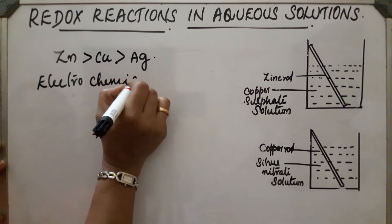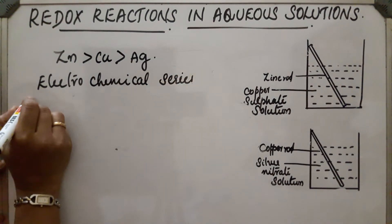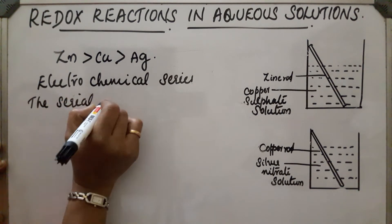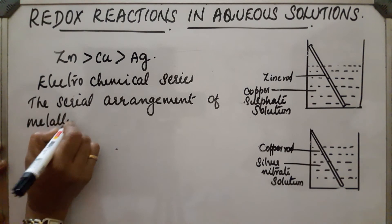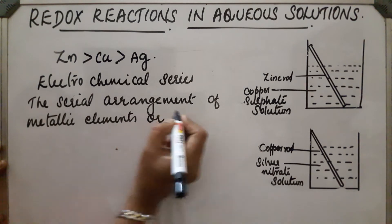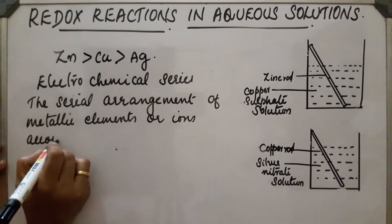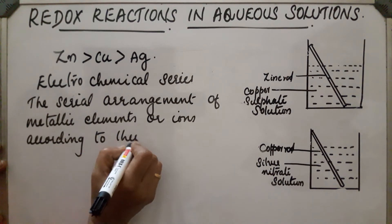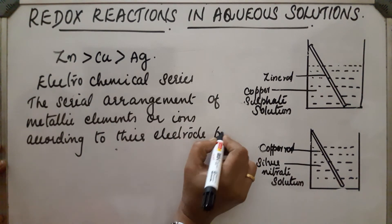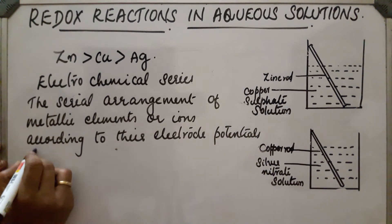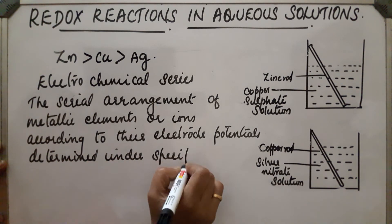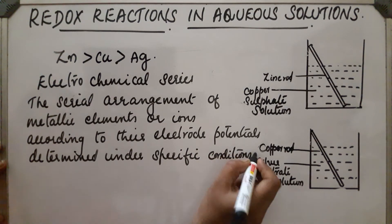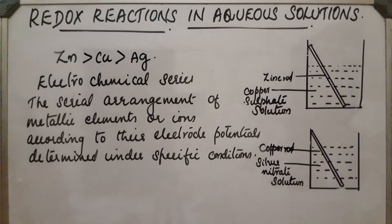What is the electrochemical series? It is the serial arrangement of metallic elements or ions according to their electrode potentials, determined under specific conditions. The arrangement of elements and their electrode potentials under specified conditions is called the electrochemical series.